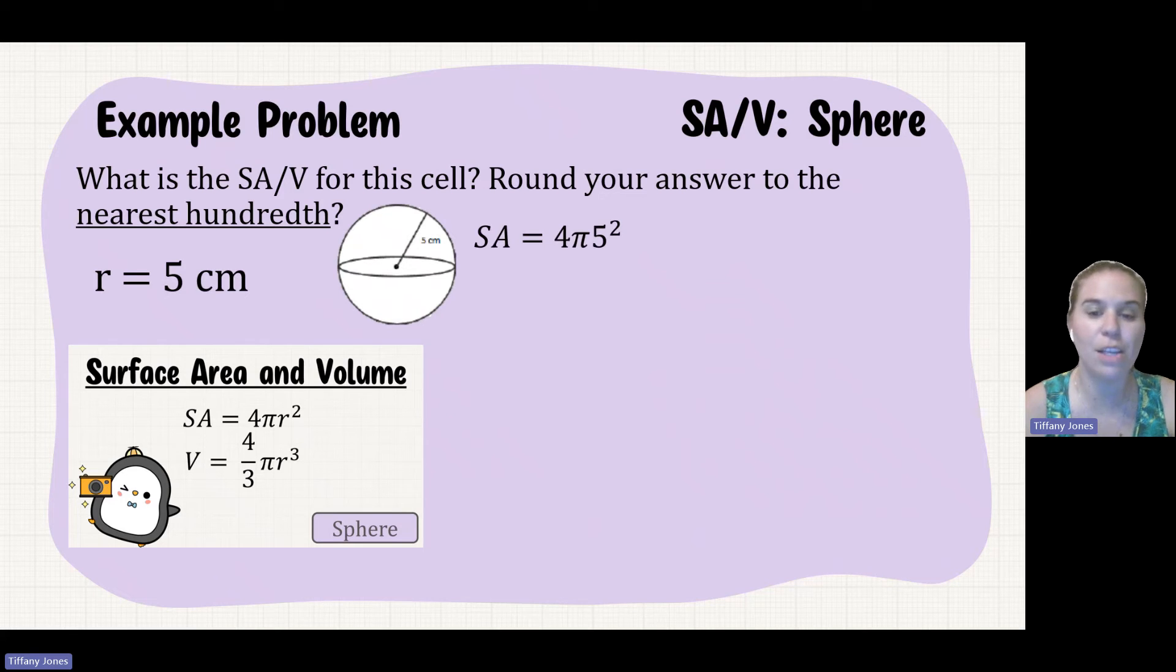And so we'll just sub this in. So 4π times 5 squared, because 5 is our radius. 5 squared is 25, so 4 times 25 is 100. So my surface area is 100π.